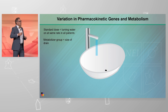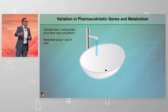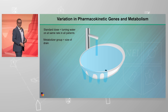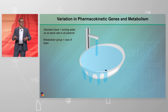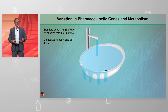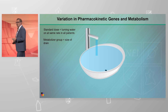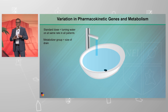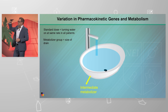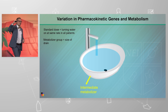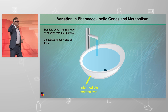We can think about the clearance of the medication, the metabolism of the medication, as the size of the bathtub drain. When we turn on the water at the same rate in the poor metabolizer, we get an overflow — they have a small drain. In an intermediate metabolizer, we have a slightly larger drain, and we still get a bathtub that's a little bit more full than we'd like.